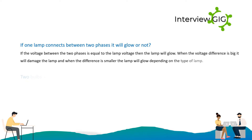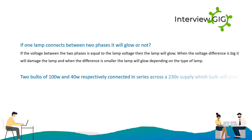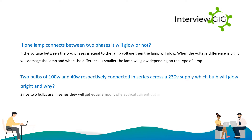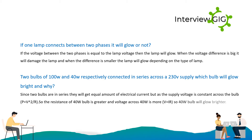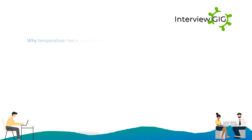Two bulbs of 100W and 40W respectively are connected in series across a 230V supply — which bulb will glow brighter and why? Since the two bulbs are in series they will get equal amount of electrical current, but as the supply voltage is constant across the bulb, P = V²/R. So the resistance of the 40W bulb is greater and voltage across 40W is more (V = I·R), so the 40W bulb will glow brighter.